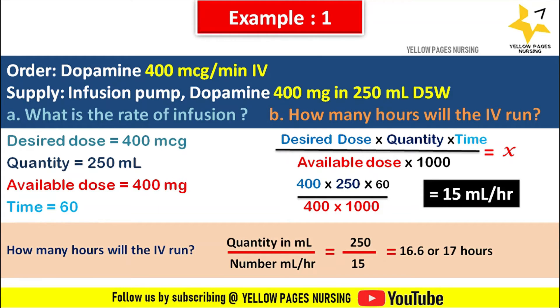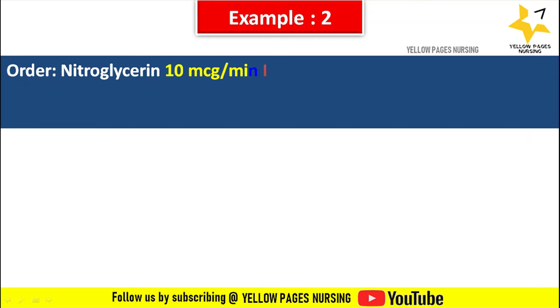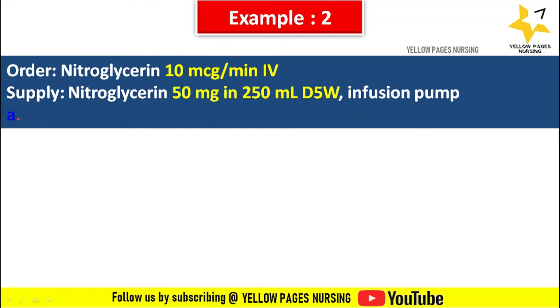Second example: doctor's order is nitroglycerin 10 microgram per minute. Supply: nitroglycerin 50 mg in 250 ml D5 water, infusion pump. What is the rate of infusion?